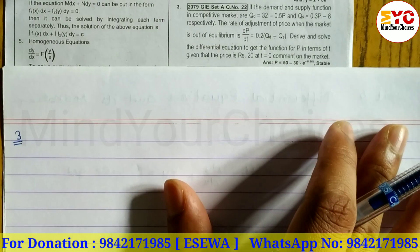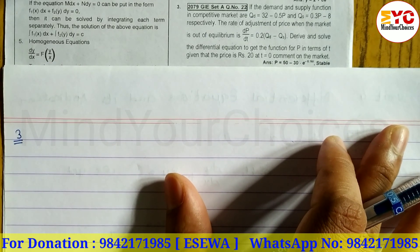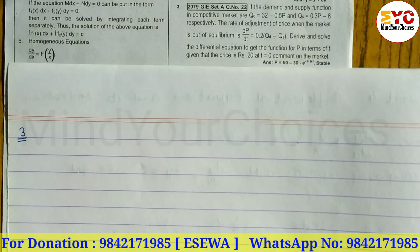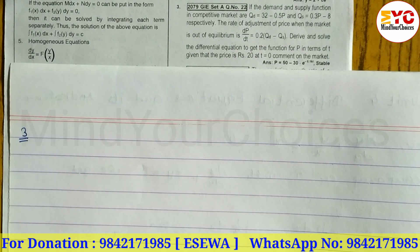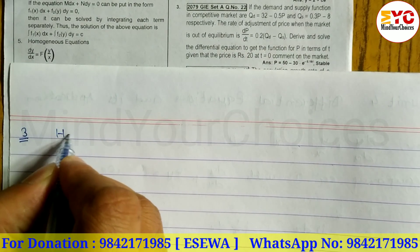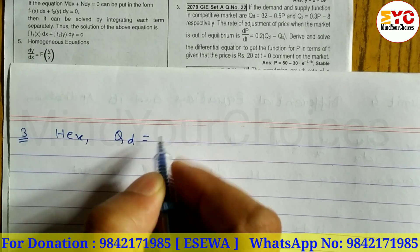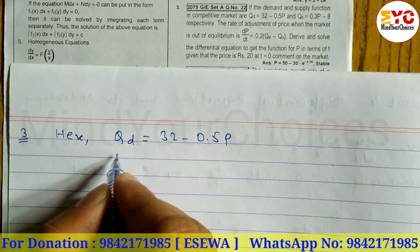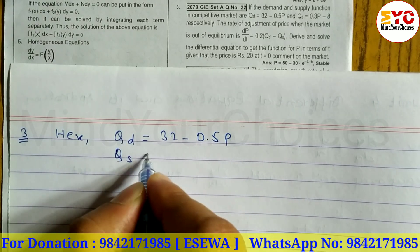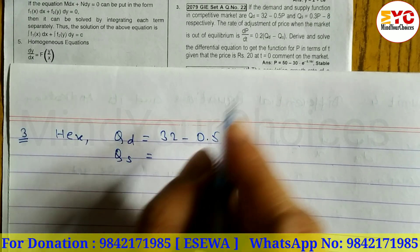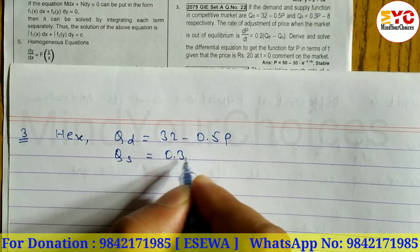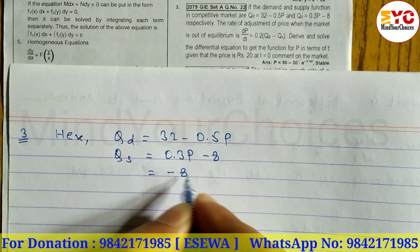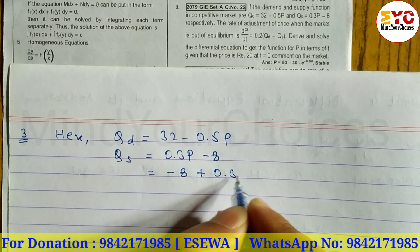The market is stable. Let's start. The demand function is qd equals 32 minus 0.5p. Similarly, the supply function qs equals negative 8 plus 0.3p.